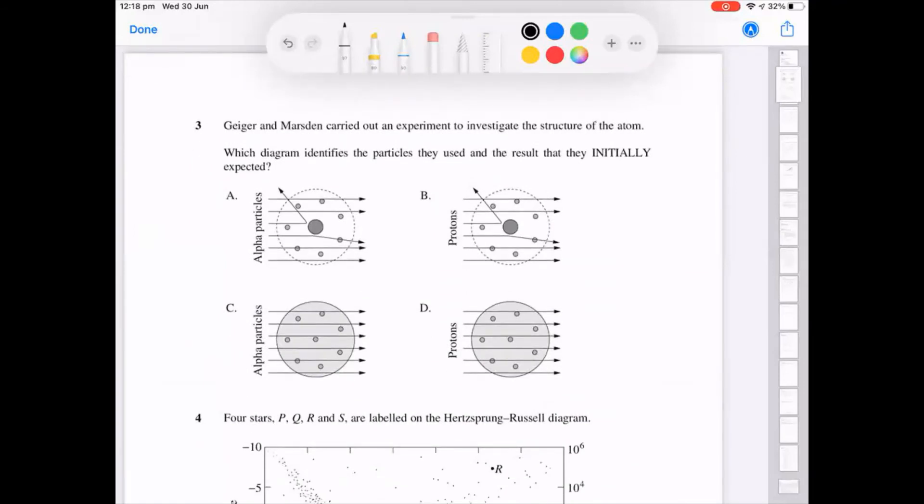So looking at the Geiger-Marsden experiment, the big thing here is that it's the initial, what they thought they'd see, not what they did see. So this was the plum pudding model of the atom, which we can see here and here. And we know that they fired alpha particles.